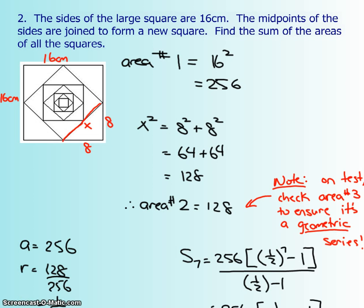The next question is, the sides of the large square are 16 centimeters. So I have this large square right here, and I labeled them with the 16 right here and right here. The midpoints of each of the sides are joined to form a new square. So here's a midpoint, midpoint, and midpoint, and so on, and they're going to make a square.